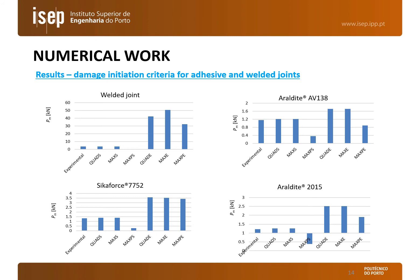The validation of this study was performed through comparison with the experimental data regarding maximum load. It was found that all strain-based criteria largely failed the load prediction, especially for the welded joints. Considering the stress-based criteria, the MAX-PS criterion under-predicts the maximum load. On the other hand, the QUAD-S and MAX-S criteria presented very close results to the experiments. The QUAD-S is the one that correlates best with the experimental data, presenting a maximum deviation of around 4% for the hybrid bonded joints with the 7752 adhesive, and marginally smaller deviations for the other adhesives. The application of this criterion to the spot-welded joint results in deviations under 3%.